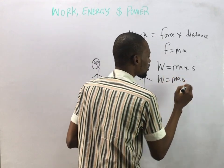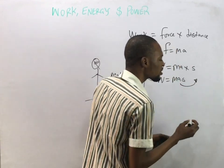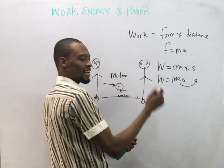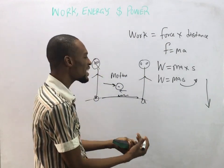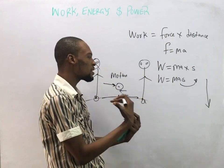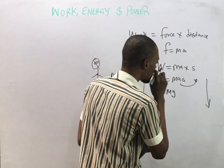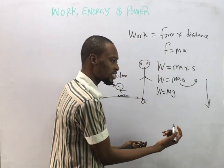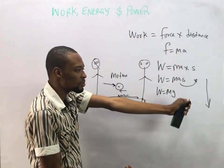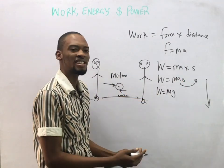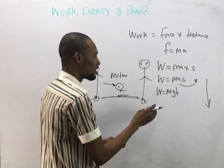Work done can also be expressed as force, which is mass times acceleration, times distance s. Therefore work done equals mas. Now, if the body is moving vertically — downward or upward — this acceleration becomes g, the acceleration due to gravity. For a vertical distance, rather than s we use h, which refers to height.